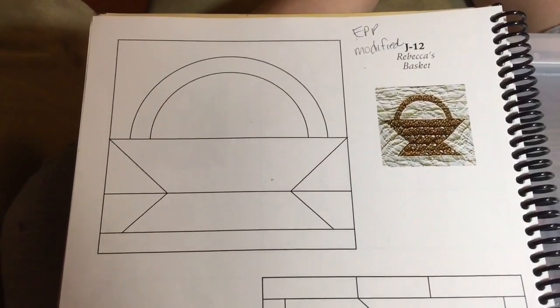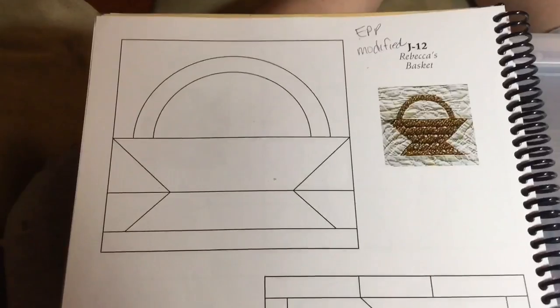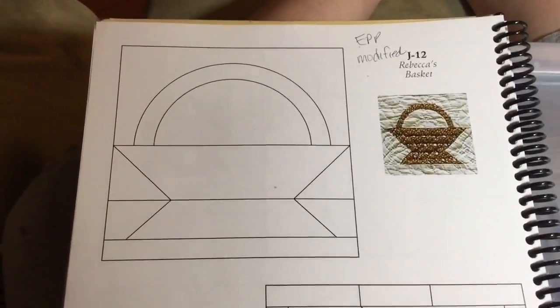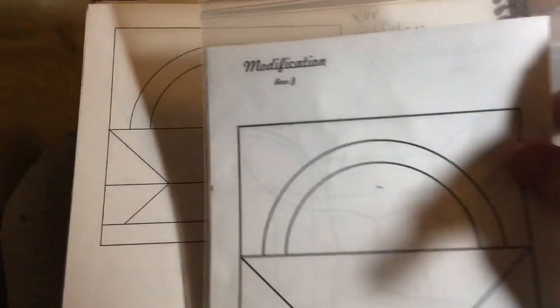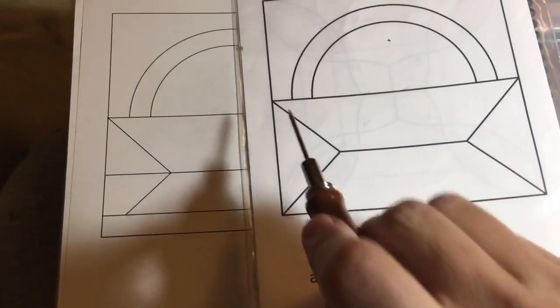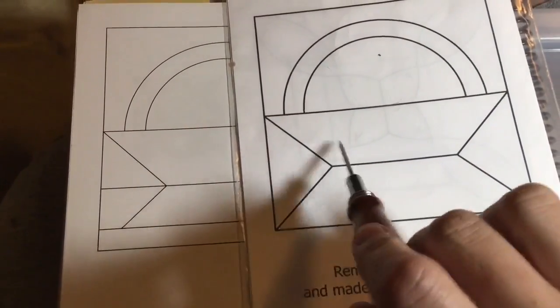The next block is J12, a little basket block. It is modified—the sides and the basket part have been modified so that this is one piece and these are equal.